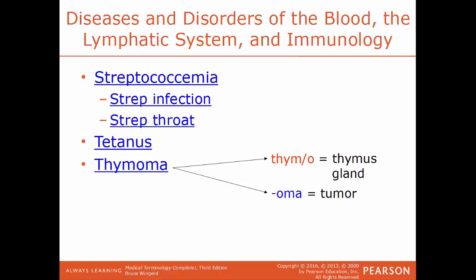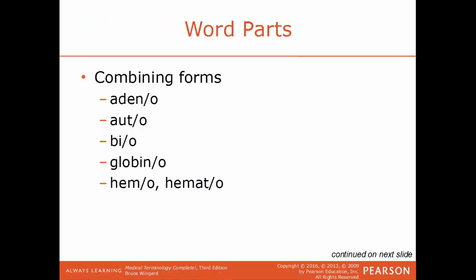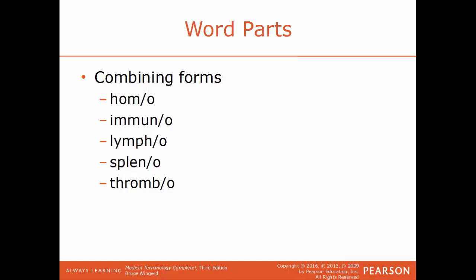Now we'll talk about treatments, procedures, devices, and some word parts. Prefixes: anti- means against; pro- means for — these are opposites. Combining forms include adeno (gland), auto (self), bio (life), globin/globino (protein), hemo/hemato (blood), homo (same), immuno (immune system), lympho (lymphatic system or lymph), spleno (spleen), and thrombo (clot).